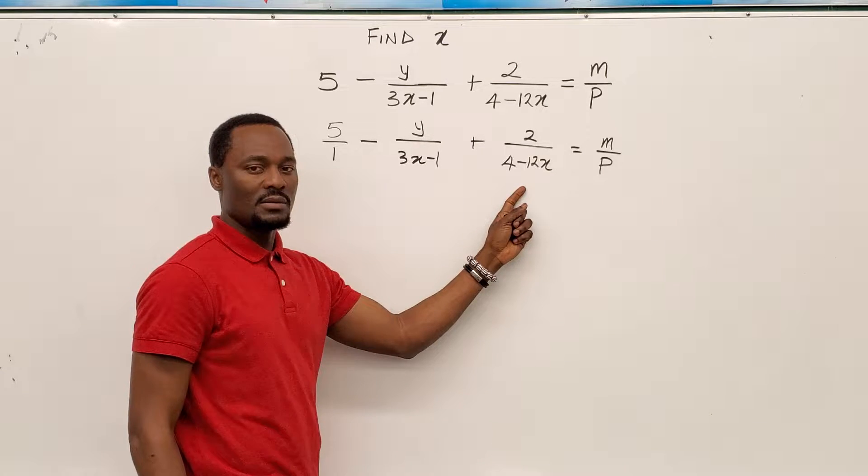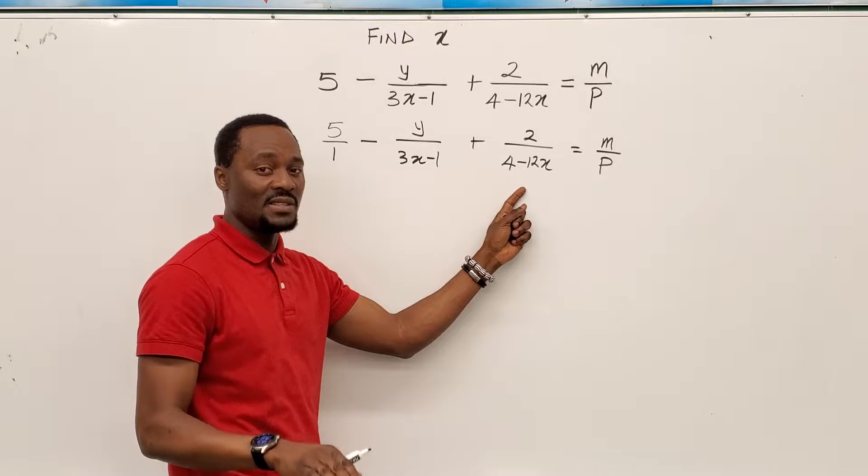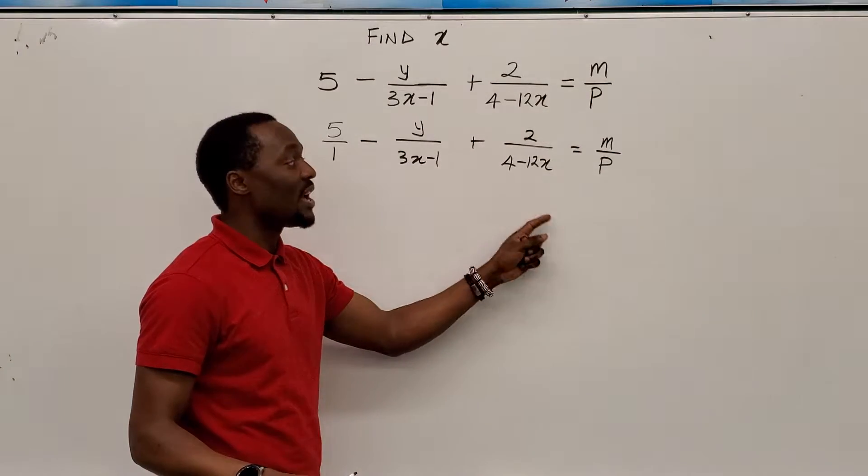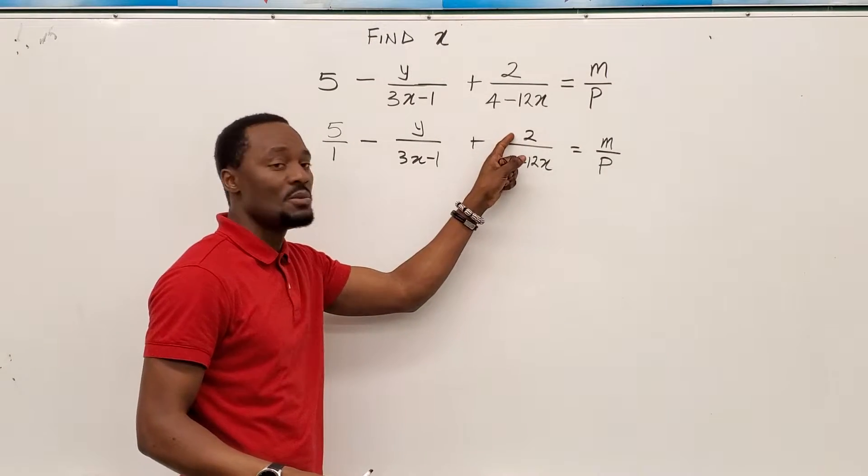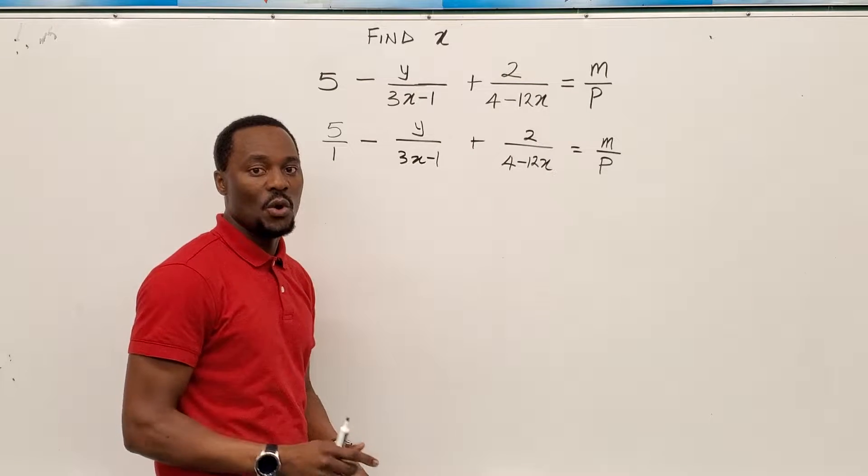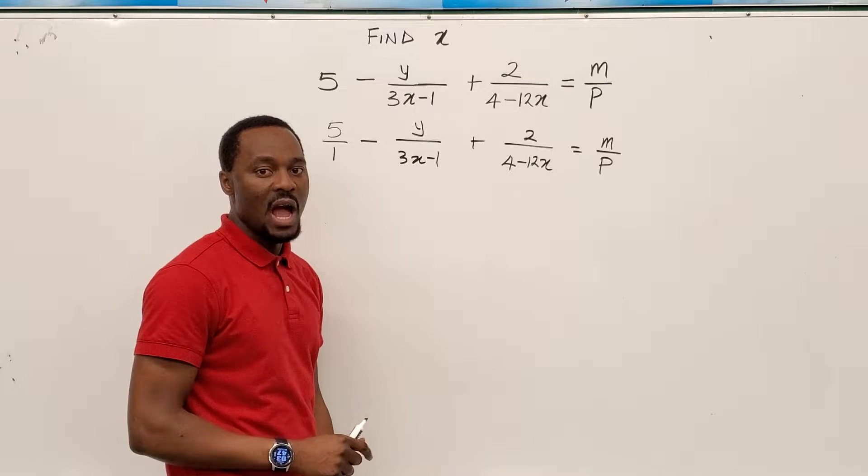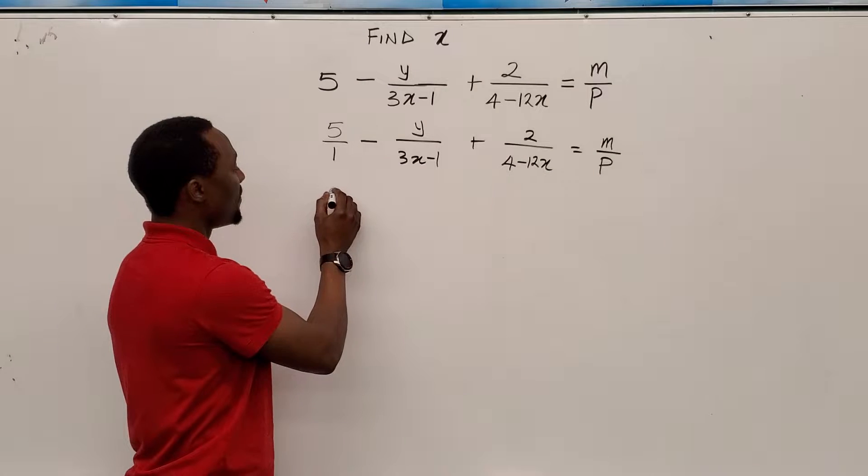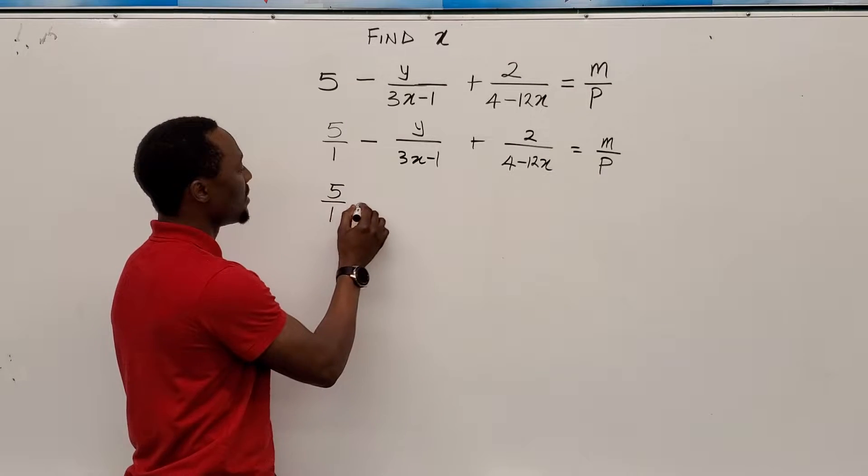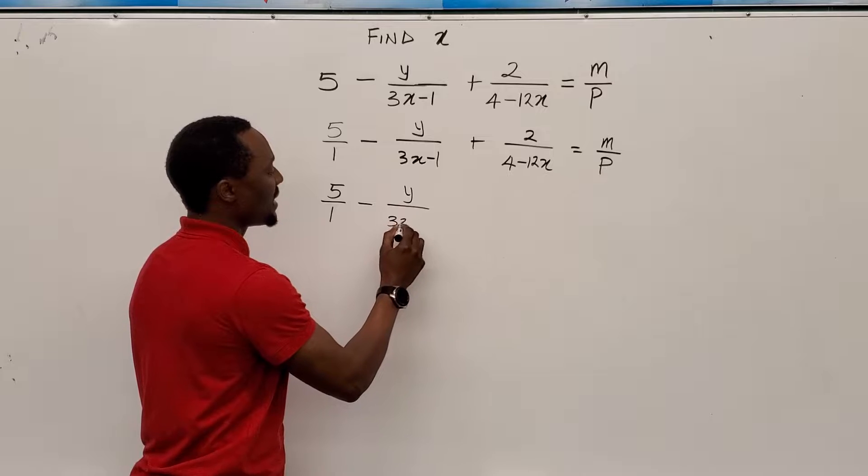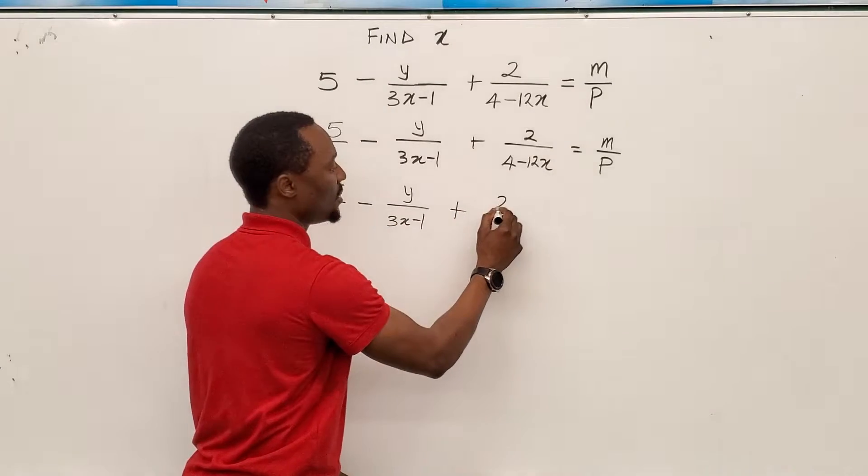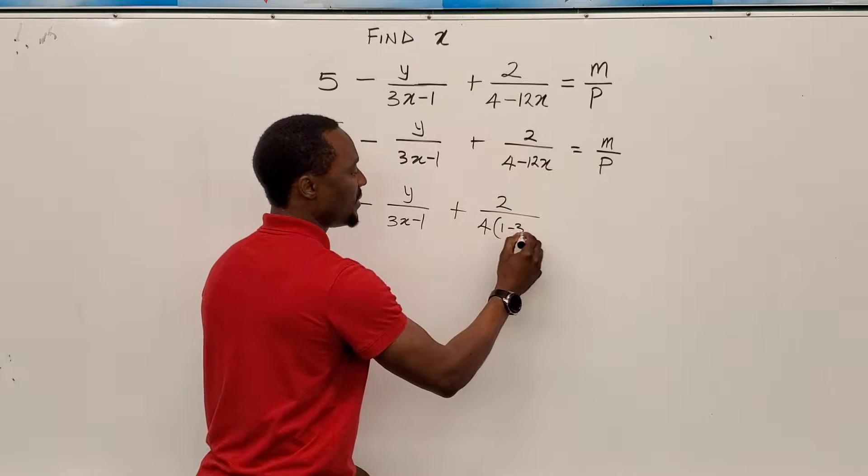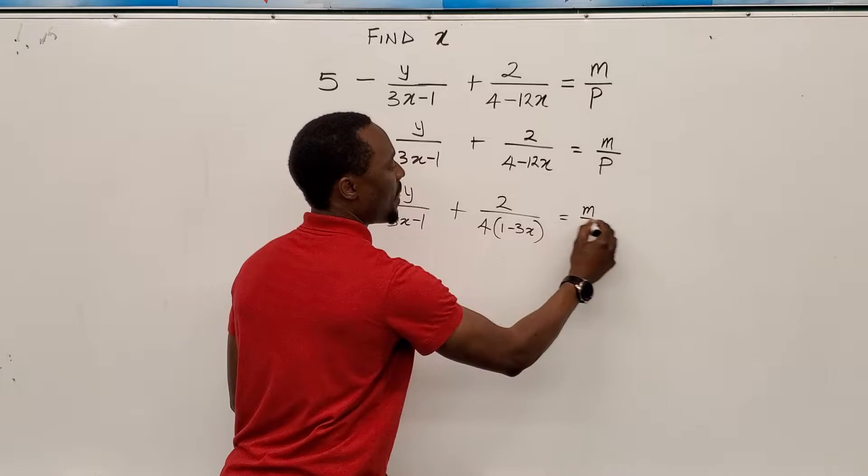So look at this. This can be factored. So as much as you can, make sure you factor everything in the denominator that can be factored. In fact, I would recommend that you factor everything that can be factored both in the numerator and in the denominator. So this is what I would do. I would say that this would be 5 over 1 minus y over 3x minus 1 plus 2 over, I can factor this, it becomes 4 into 1 minus 3x equals m over p.